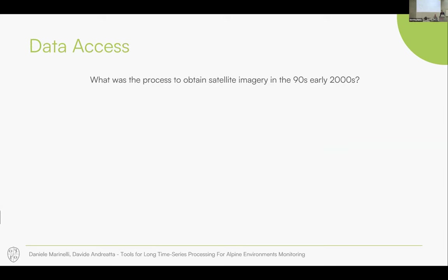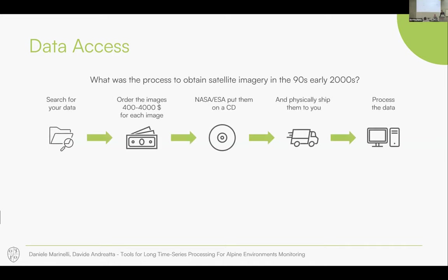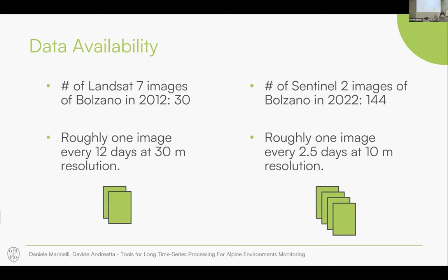To start, let's take a step back 10 to 20 years. In the past, accessing data was quite challenging. You needed to order your image, pay for it, and often it would be physically shipped to you — there was no fast internet connection. Nowadays, data access is much more straightforward. In about 10 lines of code, you can access all the Sentinel-2 data for Trentino Alto Adige or whichever area you want. Data availability has also changed significantly.